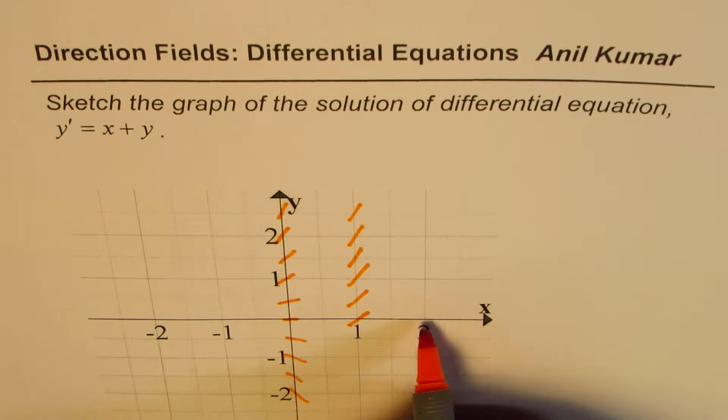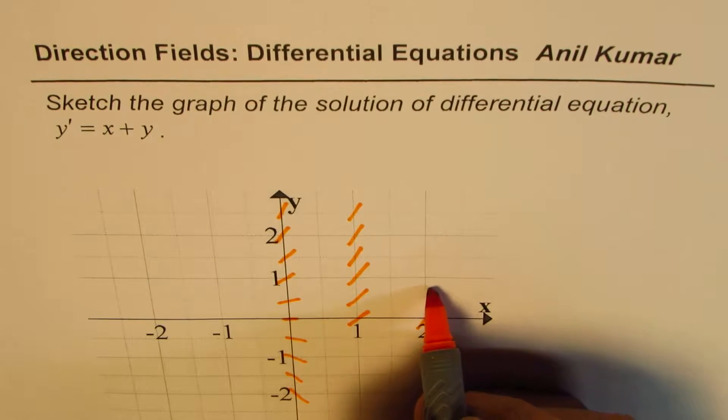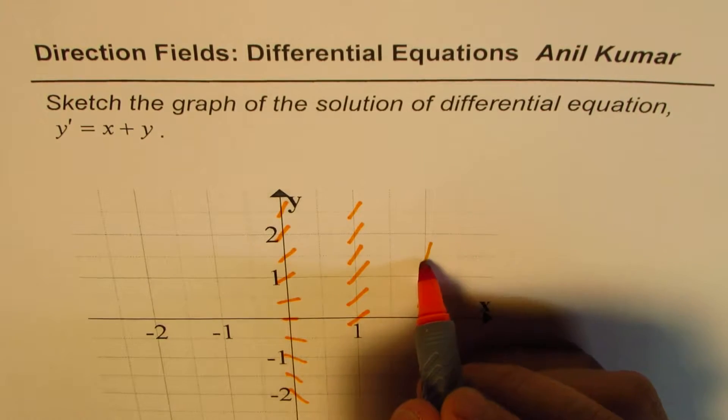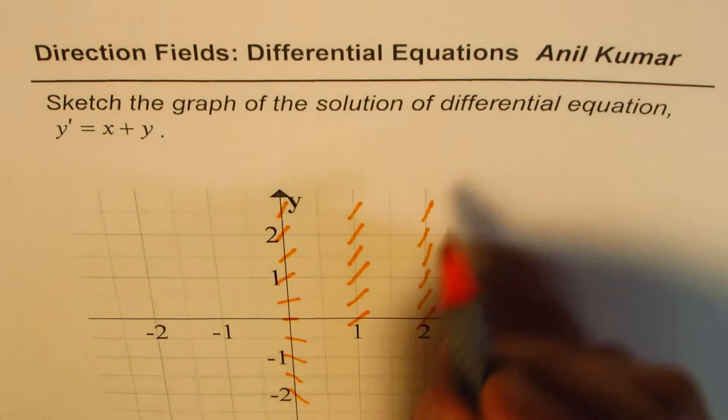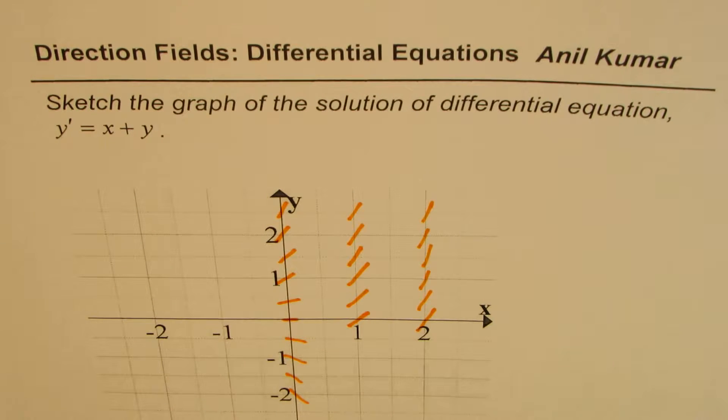Similarly, if I have x equals 2, y is 0, slope will be 2, and be like kind of steeper and steeper and steeper and steeper as we move up. Because the y value gets added up.